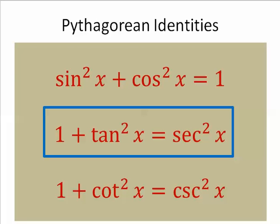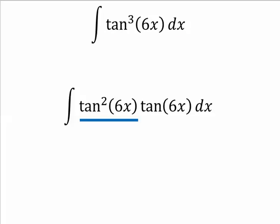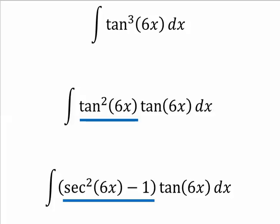Recall your Pythagorean identity involving tangent squared. We break tangent to the third up into tangent squared times tangent, and then use the Pythagorean identity.